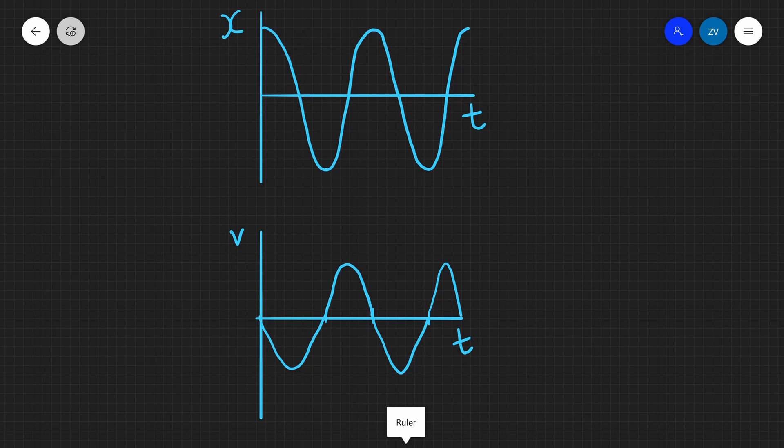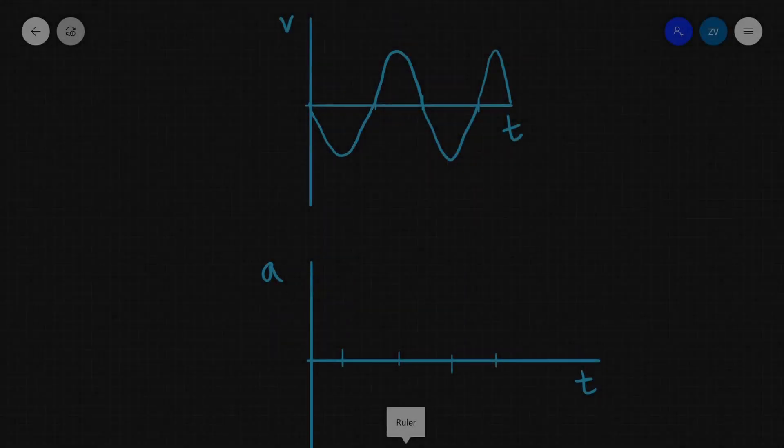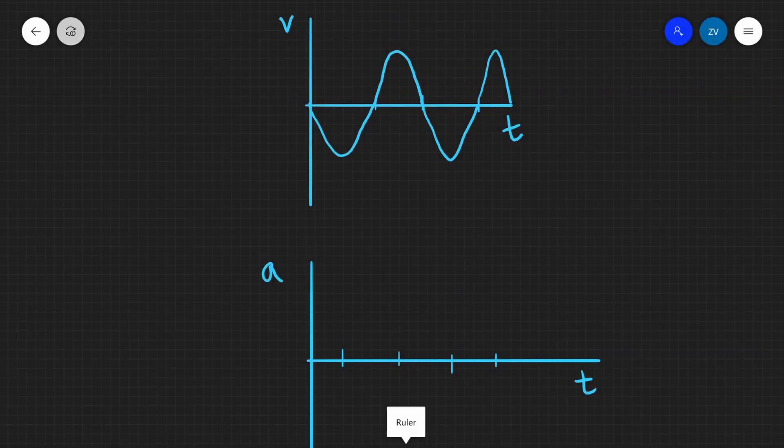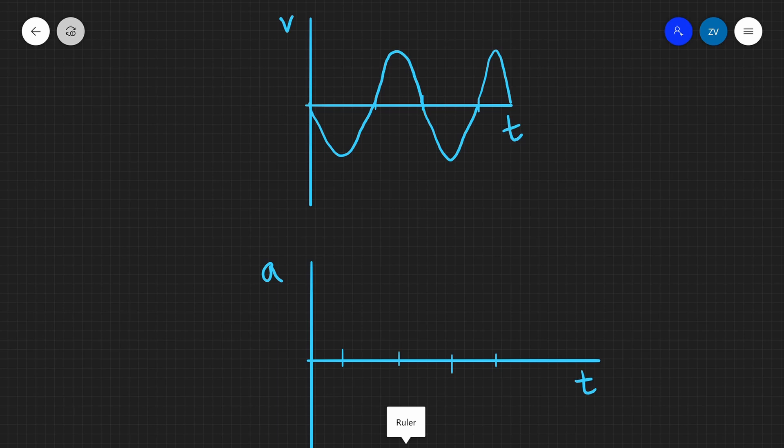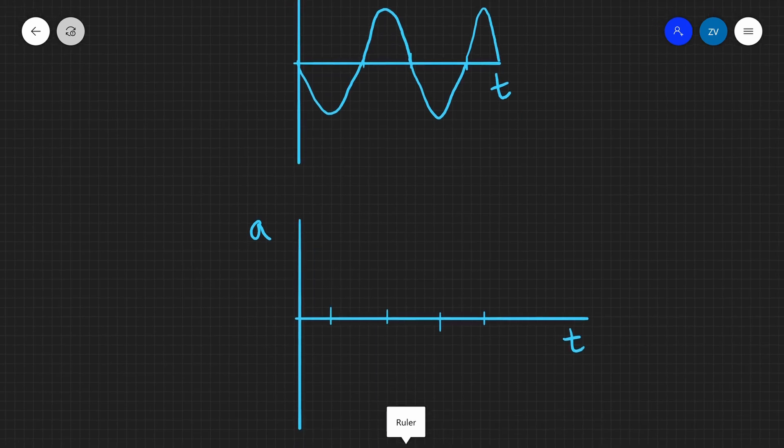Now, what we're going to have a look at next is converting that v against t graph to acceleration. We need to repeat the process once again. So acceleration is the gradient in a v against t graph, a velocity time graph.